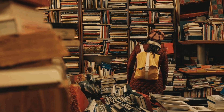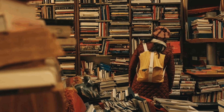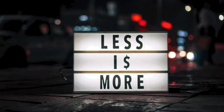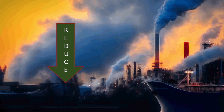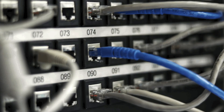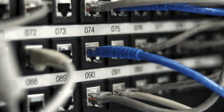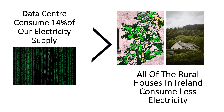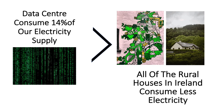If your inbox is cluttered with emails, one simple way to reduce the energy we use and the amount of greenhouse gases we release is to delete them. Those emails are stored in data centers and that requires energy. Data centers are the biggest drivers of demand for electricity in the national grid. They consume 14% of Ireland's electricity supply — that's more than all of the housing in rural areas.